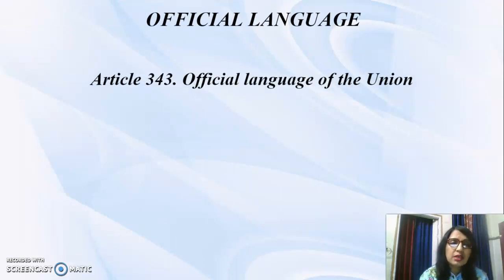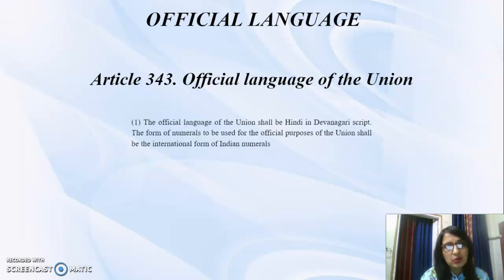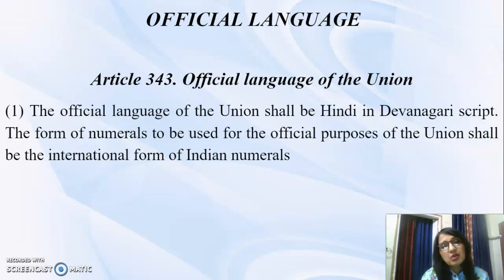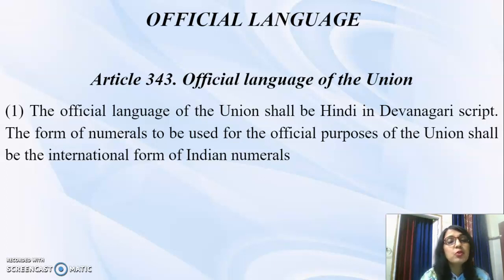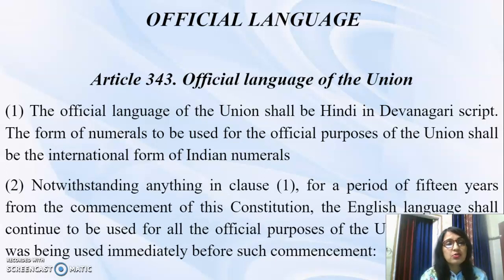Article 343 is titled 'Official Language of the Union.' The official language of the Union shall be Hindi in Devanagari script. The form of numerals to be used for the official purposes of the Union shall be the international form of Indian numerals. So Hindi was adopted with its Devanagari script, but the international form of numerals — not Hindi numerals — was adopted.